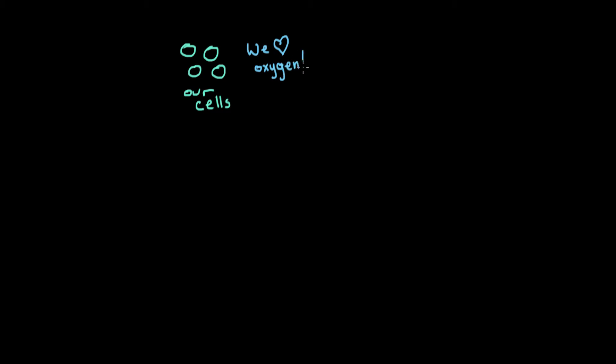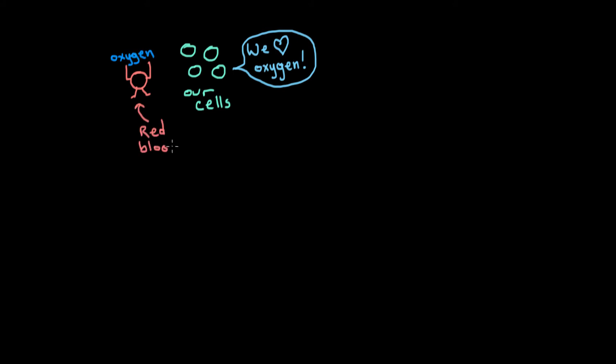We know that every cell in our body needs oxygen to survive. It's really important that our cells have constant access to oxygen, and in fact, many of our cells can start to die if they're deprived of oxygen for even a few minutes. So to get oxygen to all of our cells, we have special delivery cells dedicated to carrying oxygen to every other cell. These delivery cells are red blood cells within our blood.